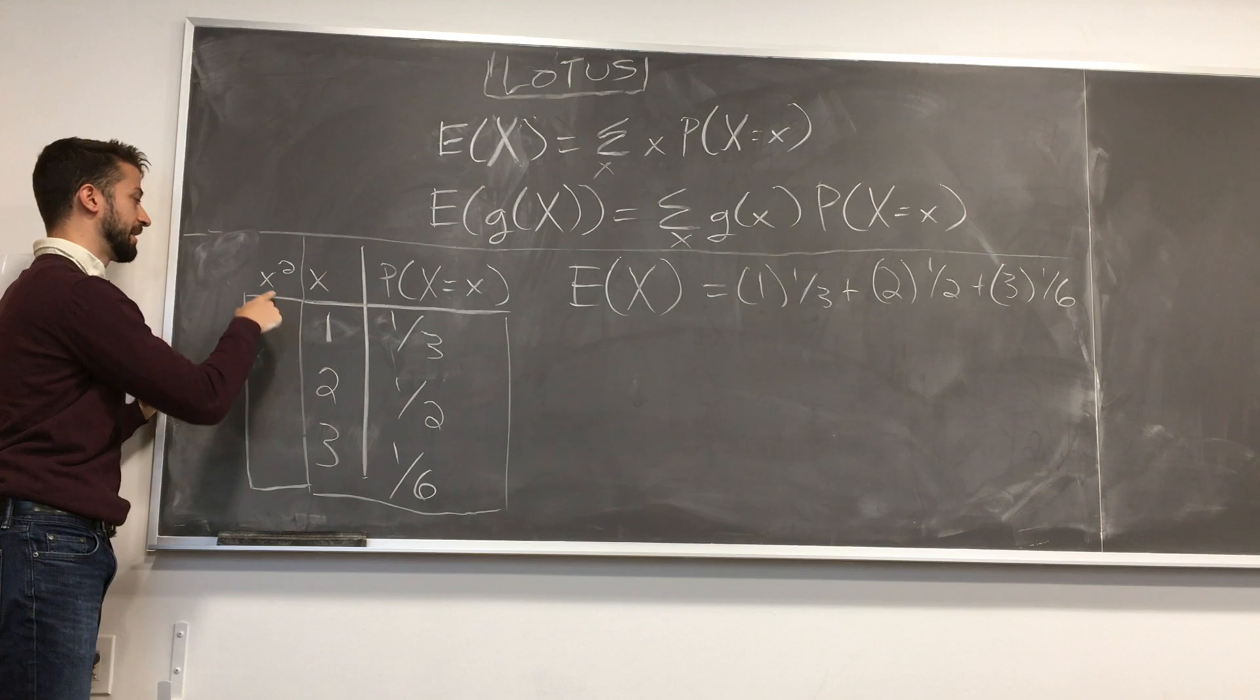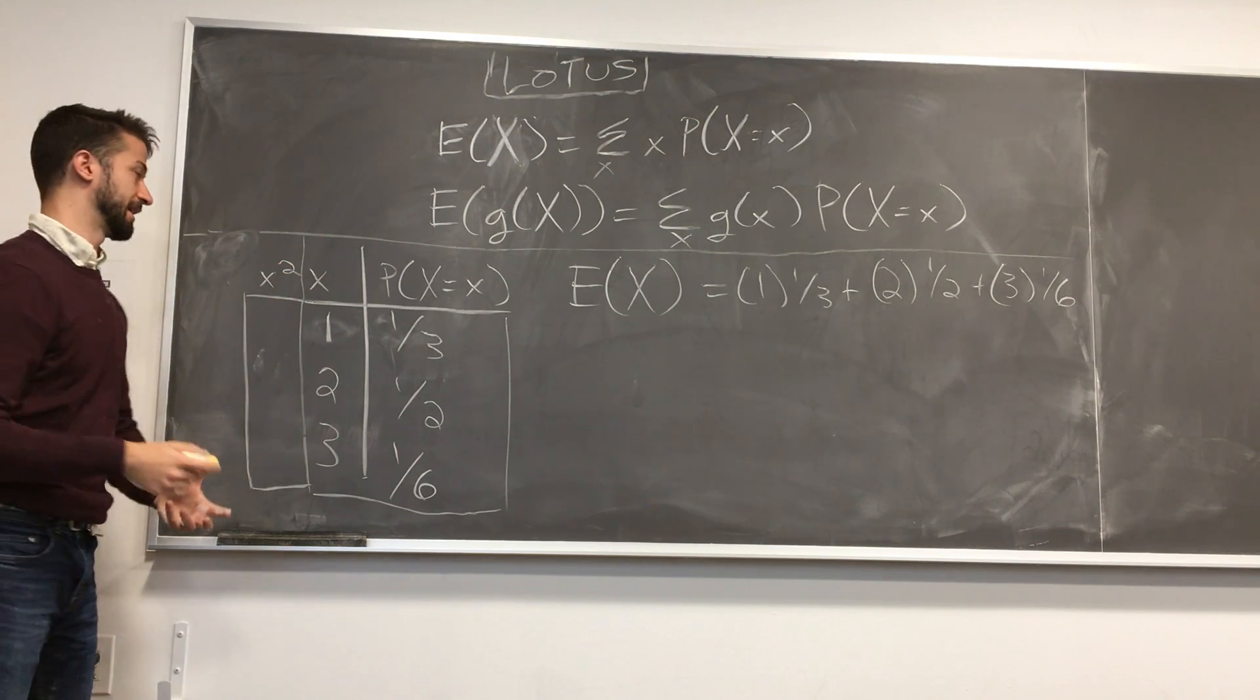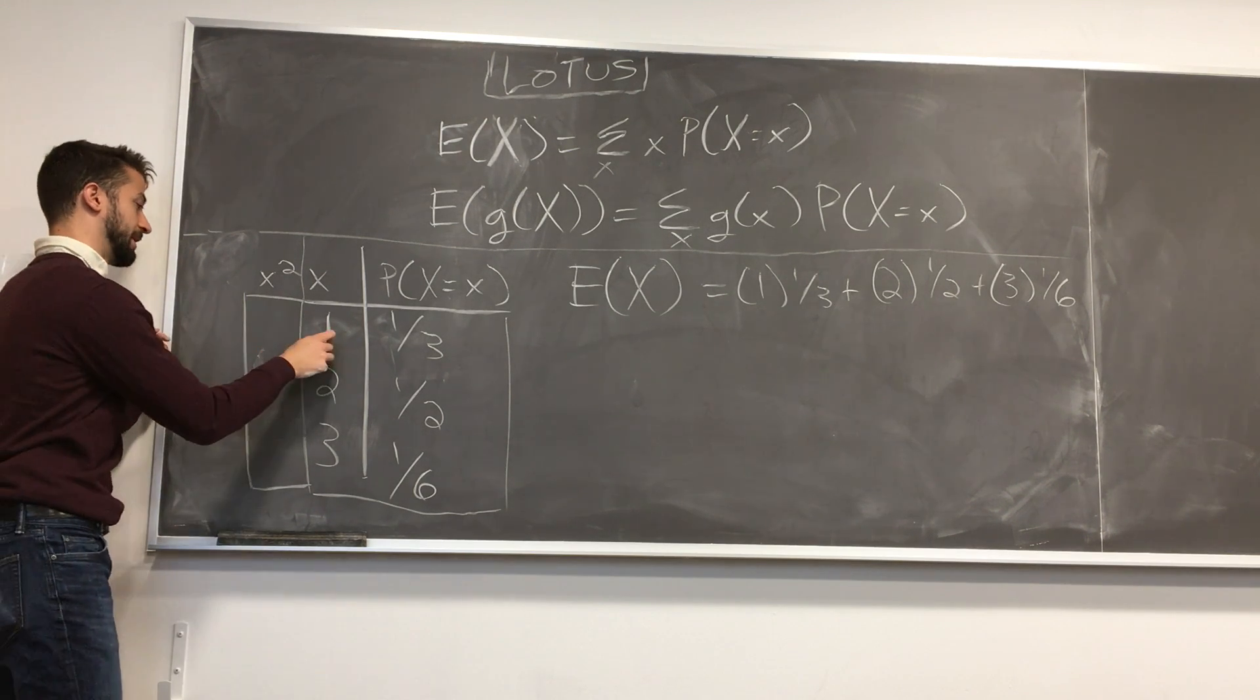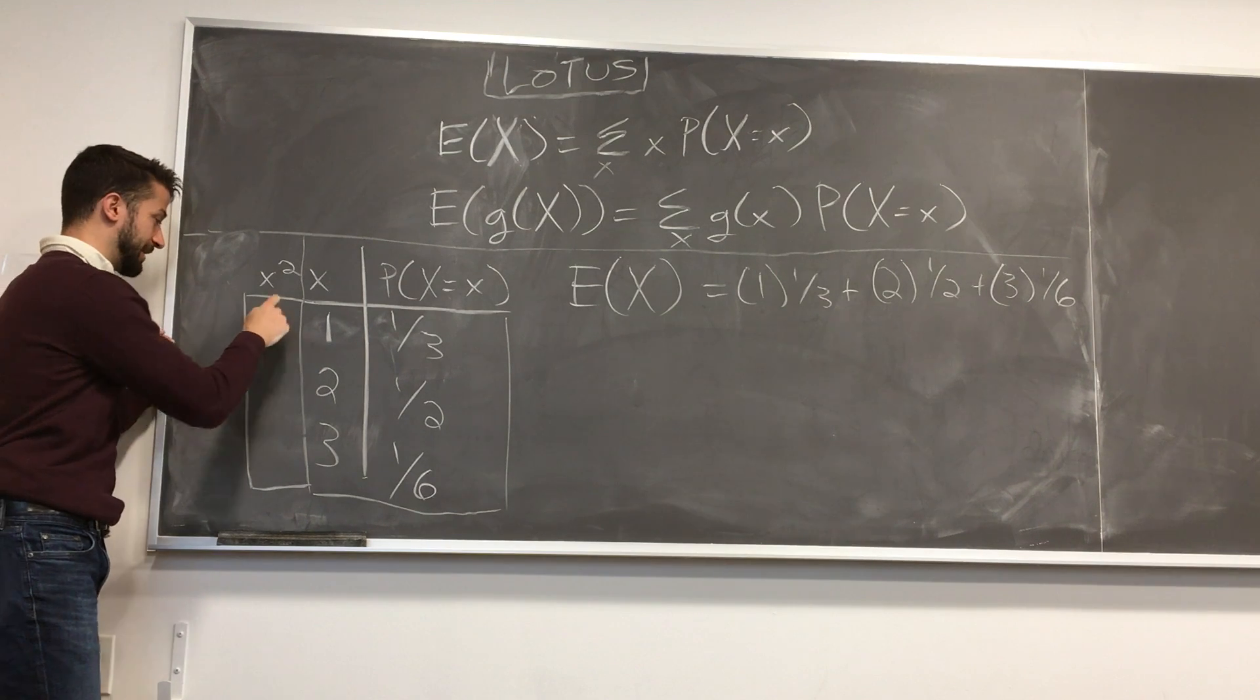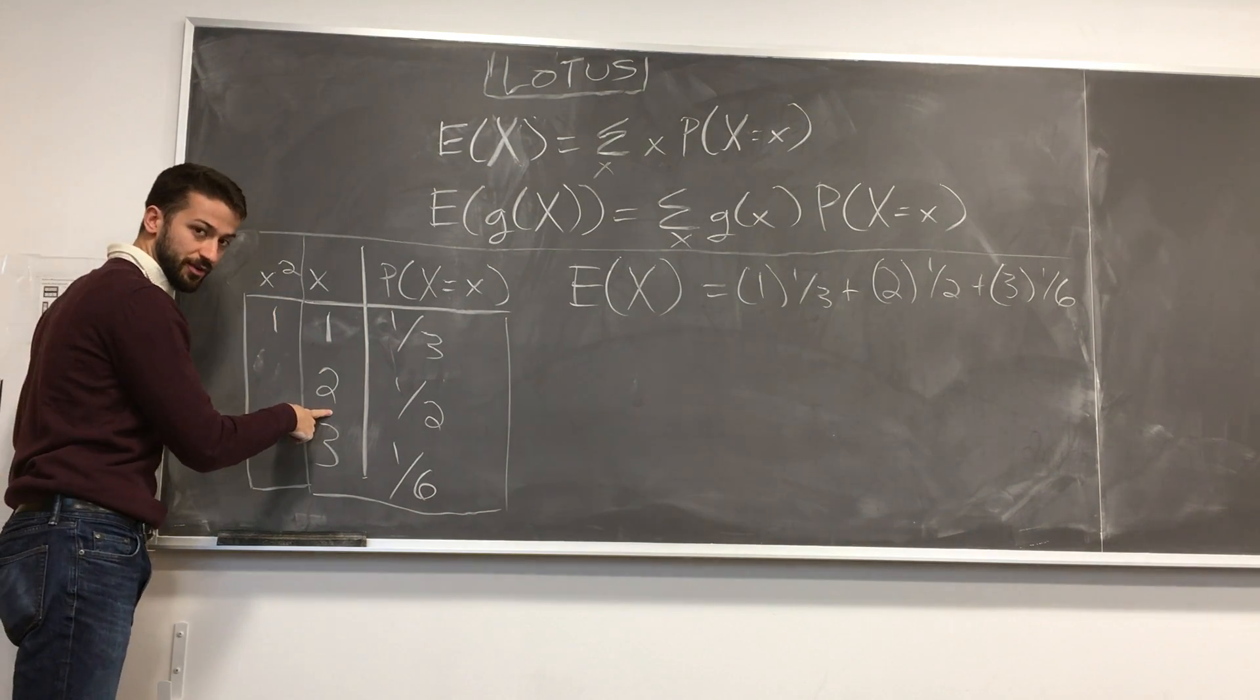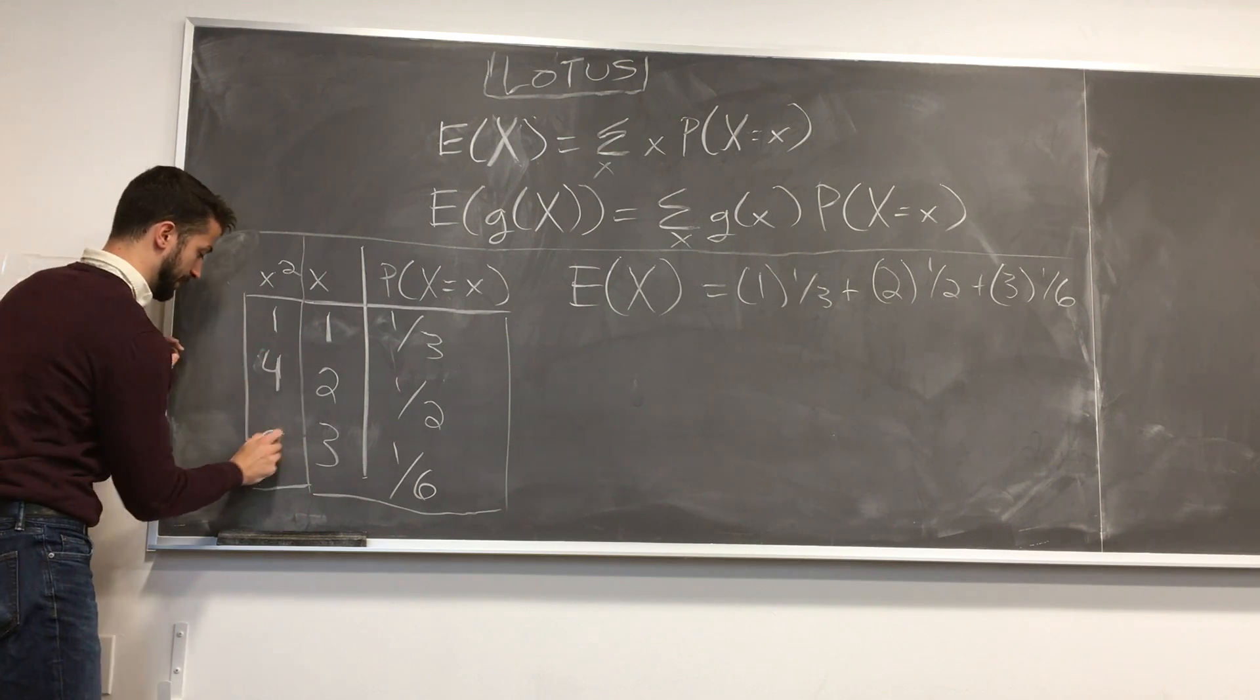We expand our table. We have little x here, the values that big x can take on, and little x squared, these are obviously the values that big x squared can take on, that the random variable x squared takes on. So here, if big x takes on 1, big x squared takes on 1. Big x takes on 2, big x squared takes on 4. It's 2 squared, etc. It becomes 9.